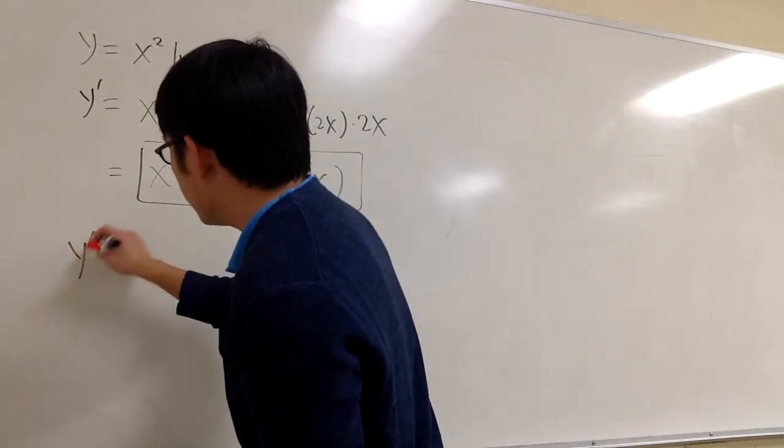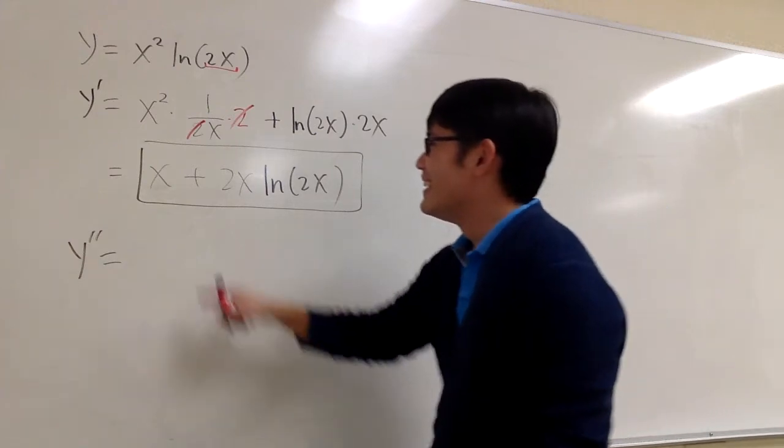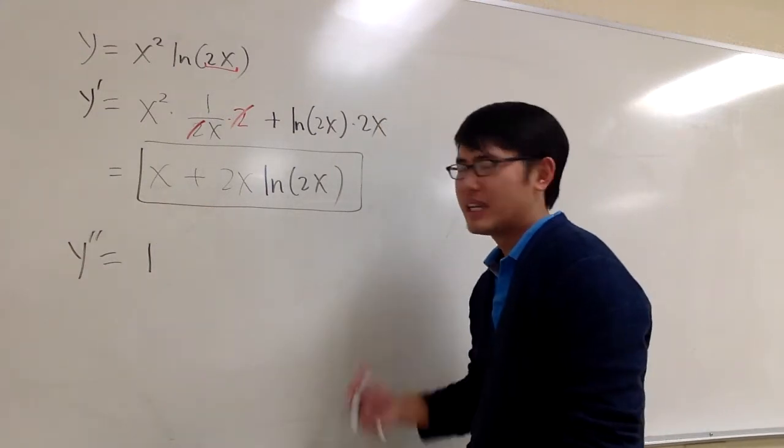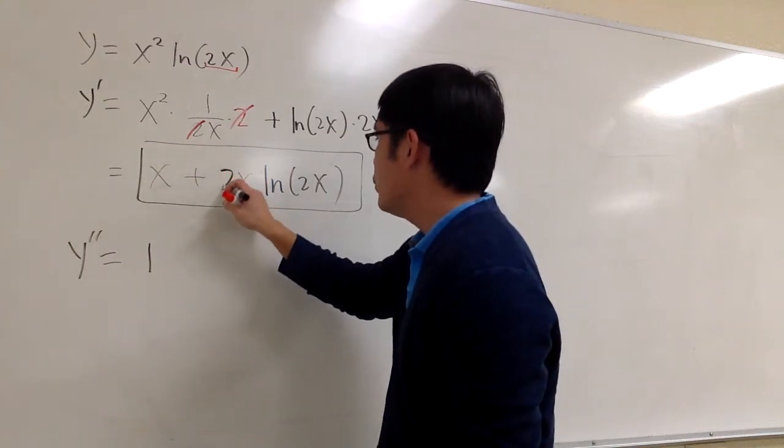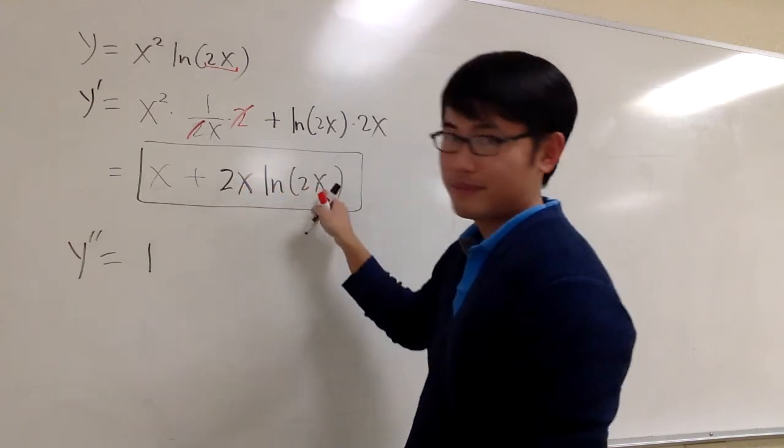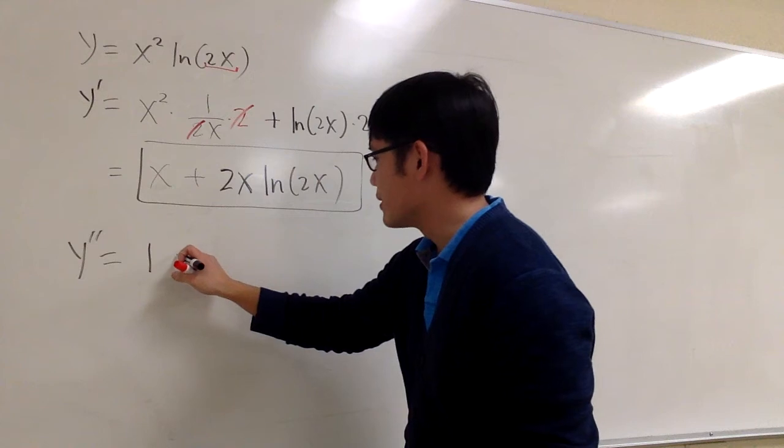And now to get the second derivative, we just need to look at this and then do the derivative again. So derivative of x is equal to 1. That's easy. This is 2x times ln of 2x. We have to use the product rule for this one. So let's get to work.